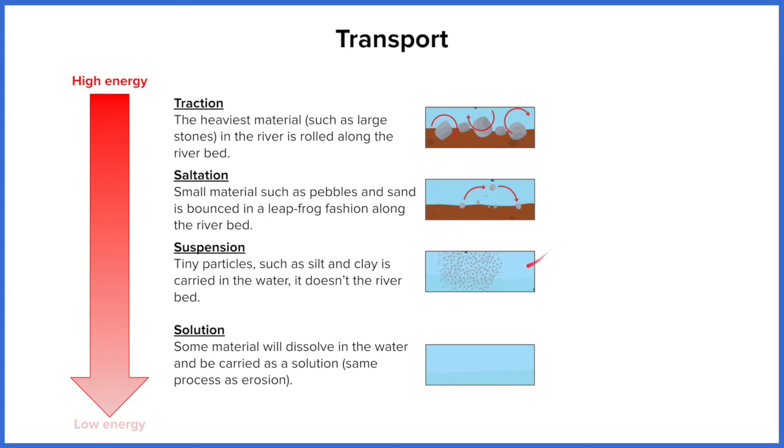We then have suspension. This is where we get the really small particles, things like sand and silt, which can be picked up by the river and maintained in the body of the water and it doesn't touch the bottom.